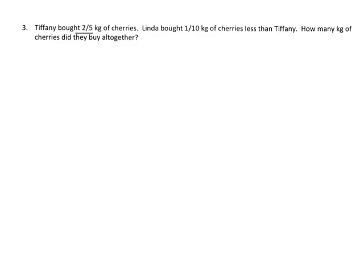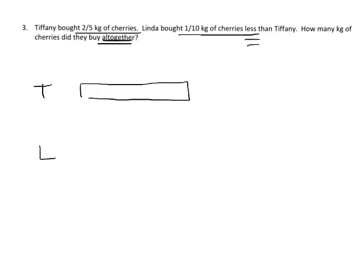Now let's do another problem. Tiffany bought two-fifths kilogram of cherries. Linda bought one-tenth kilogram of cherries less than Tiffany. How many kilograms did they buy altogether? I'm going to draw a double tape diagram, labeling them T and L, and make both bars exactly equal to start.